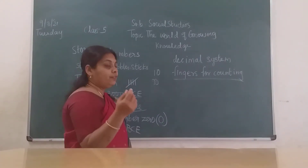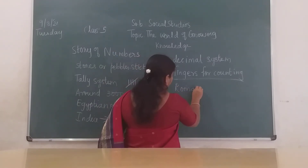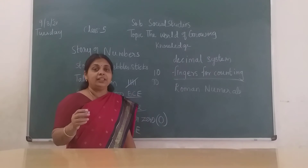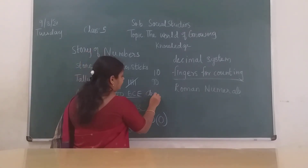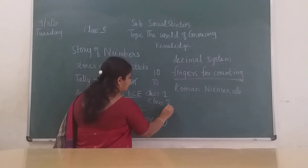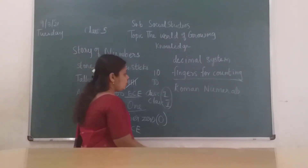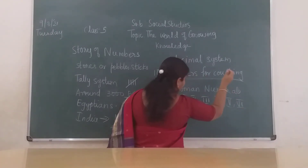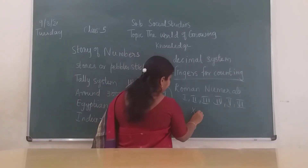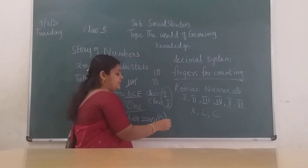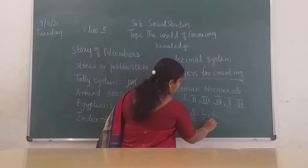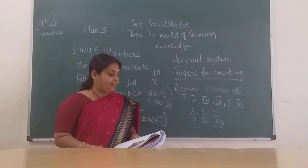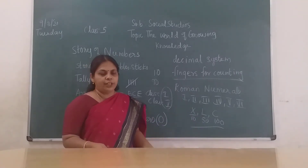The next development is Roman numerals, discovered by the Romans. You may have already learned Roman numerals — you even write your class number using them: Class I, Class V. They have symbols like I, II, III, IV, V and onwards. X stands for 10, L for 50, and C for 100. You will study this in more detail in 6th standard.